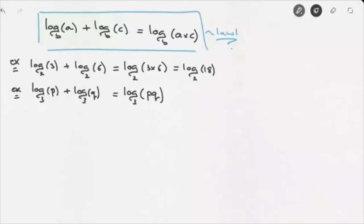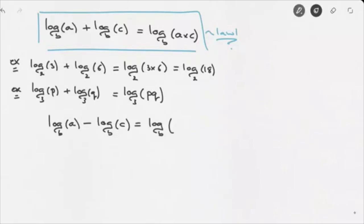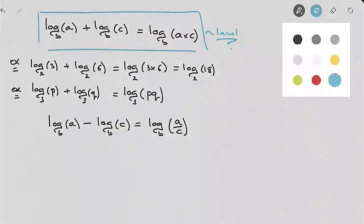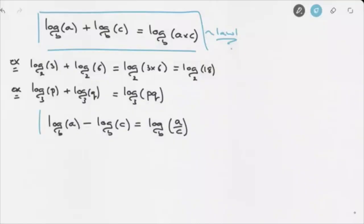Now let's look at the second law. Again, working in base B, consider log base B of A minus log base B of C. The second law of logarithms tells us that this equals log base B of A over C. I'll box that result and call this Law 2.